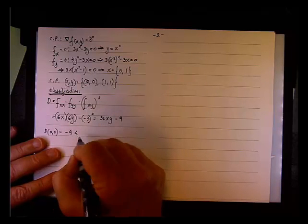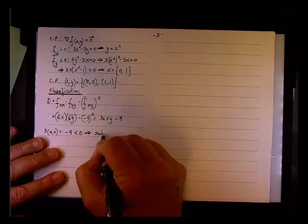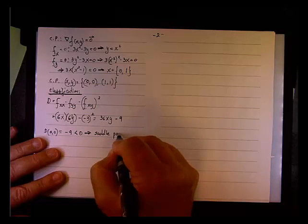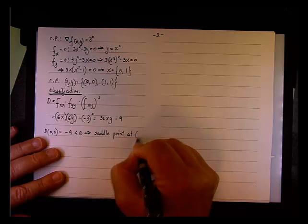So let's see. What is D at (0,0)? Well, at (0,0), we have 0 minus 9, so it's -9. So it's negative. So we can say we know that we have a saddle point. We have condition 3, so saddle point at (0,0).